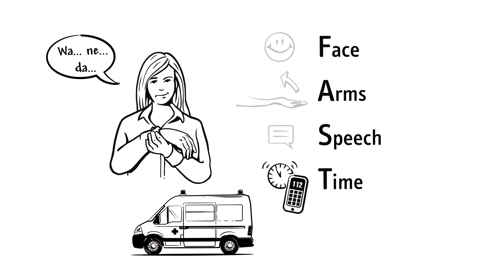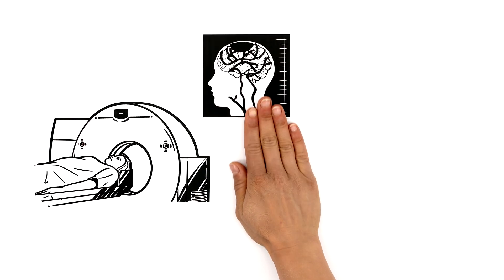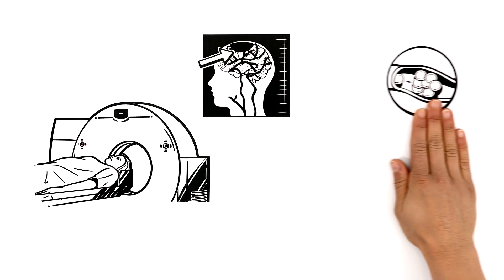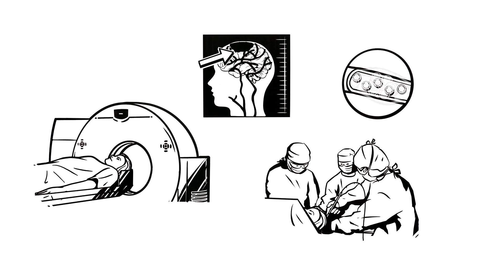Every second counts to prevent brain cells from dying. Blood thinning drugs are usually given at the scene. In the hospital, a brain scan is then used to locate the affected area. If there's a clot, this area can also be treated straight away with a catheter to remove the blockage.